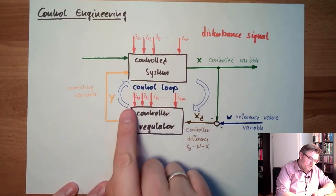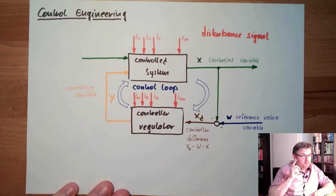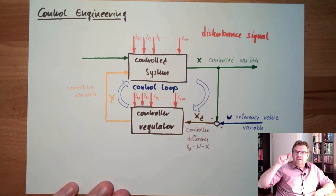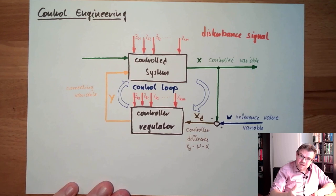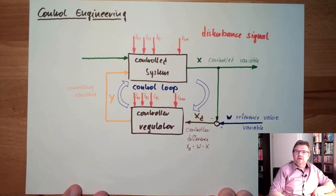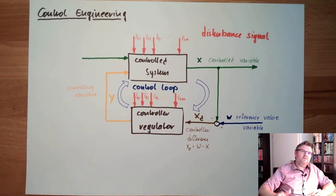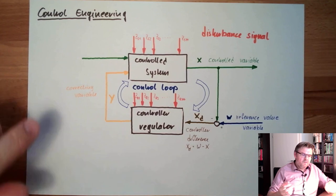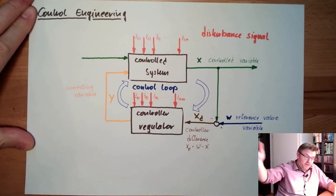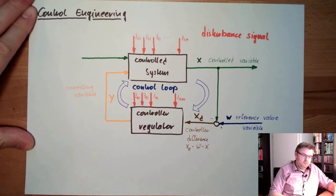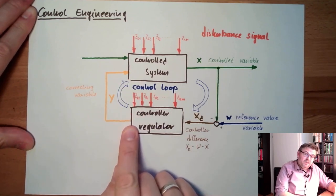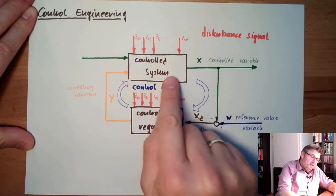Then we have digital processing. Digital processing means the controller is working with numbers. The control deviation at the input of the controller is digitized — transferred into a number. It is no longer a signal, it's just a number. With this number the controller can calculate using multiplication, subtraction, and so on. The result of all those calculations is a new correcting variable. The output will also be a number, which is then converted by a digital-to-analog converter into an analog signal again, and this will influence the control system.